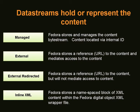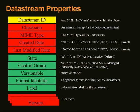For each data stream there's a whole set of properties — and this is where some of the durability information comes in. Every data stream has its own unique ID within that object. It has a checksum; Fedora provides checksums that are turned on by default, and you can configure different types of checksums or plug your own in. The MIME type of the data stream is a critical piece of information the repository captures on ingest.